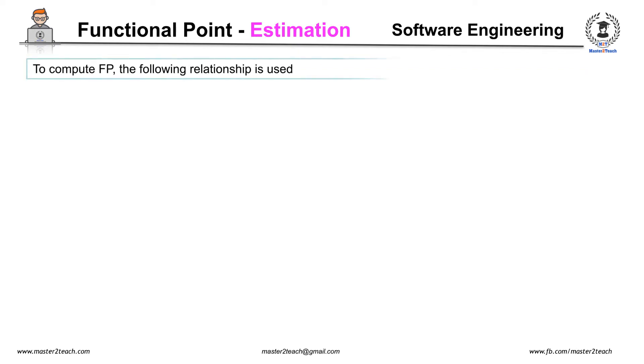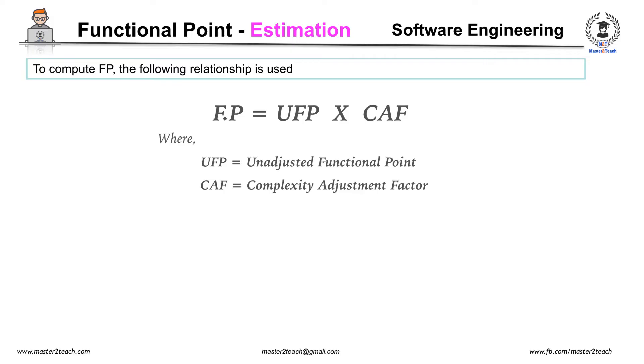Now let's move to calculate functional point. To calculate functional point, the functional relationship is used. Functional Point is equal to UFP times CAF, where UFP is Unadjusted Functional Point and CAF is Complexity Adjustment Factor. Let's follow step by step.